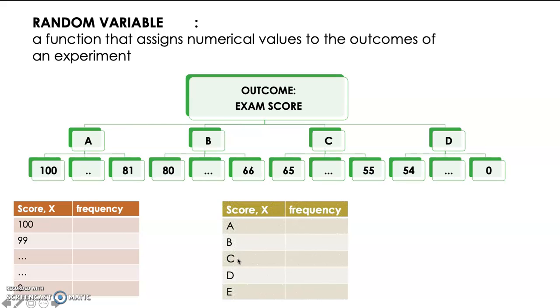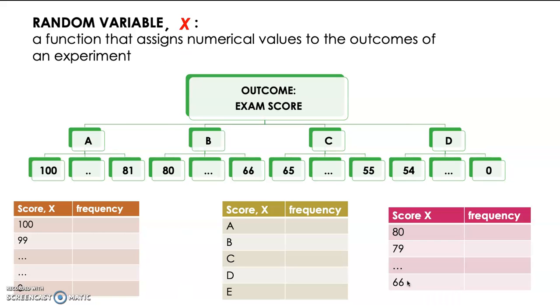In our second experiment, the random variable would be the score A, B, C, D, and E. And in our last experiment, let's say our experiment is the score for a student to get a B. Thus, the random variable is the score between 80, 79, and so on until the lowest is 65, 66. This numerical value assigned in the outcome of a random experiment is the random variable, which is generally denoted as X.